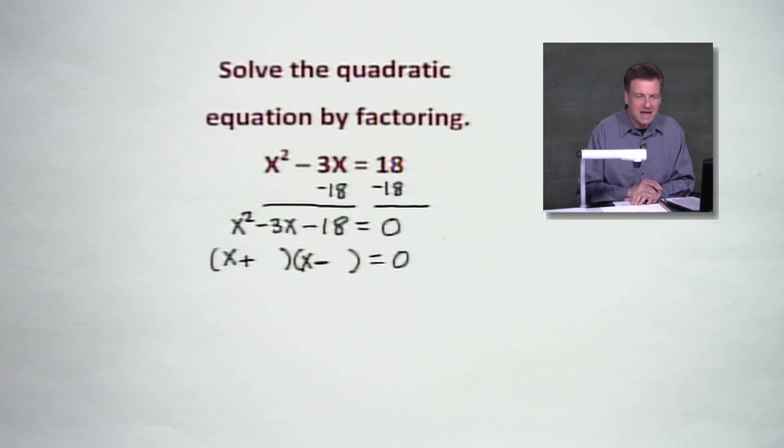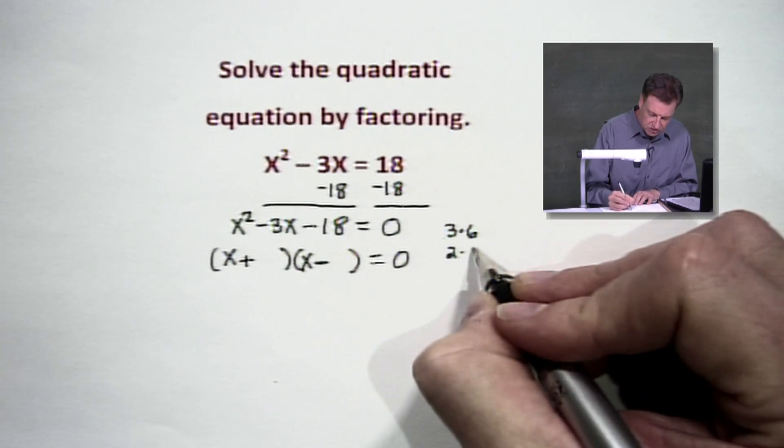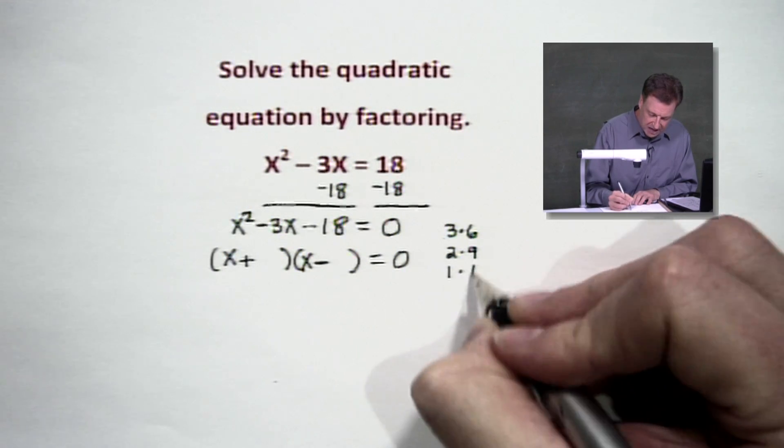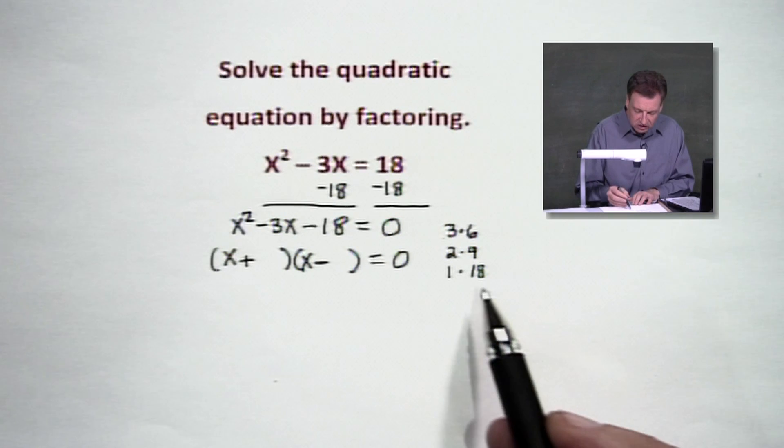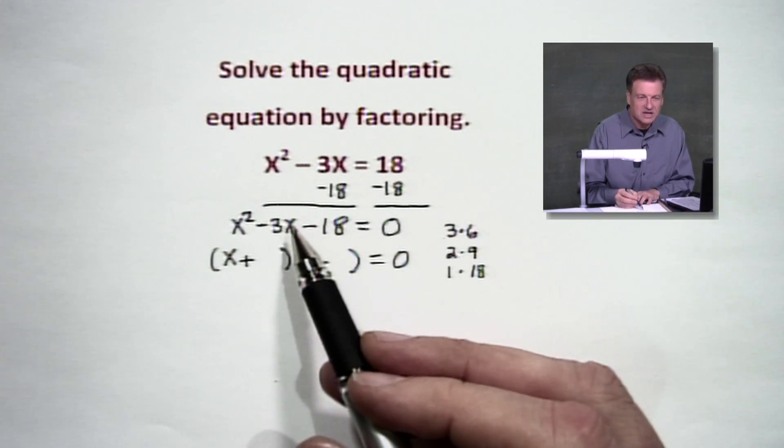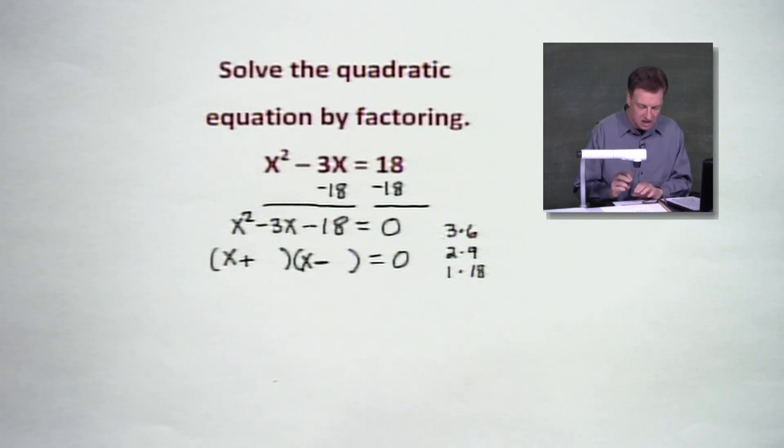So now I've got to think about 18. What are the factors of 18? Well, I could have there's 3 times 6. There will be 2 times 9. There's also 1 times 18. All of those are options. However, only one of these is going to give me a negative 3 back in the middle. And what I've got to do is figure out which way is this going to go.